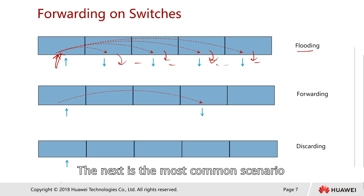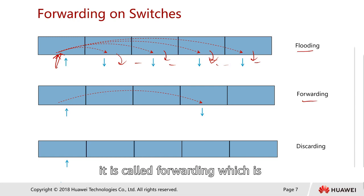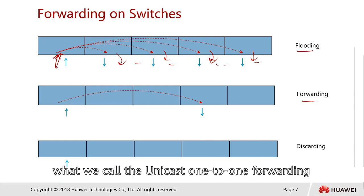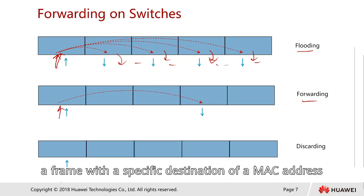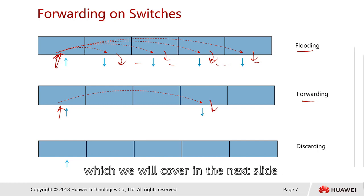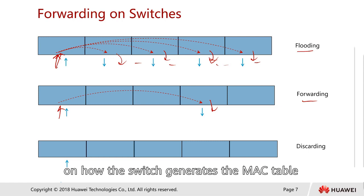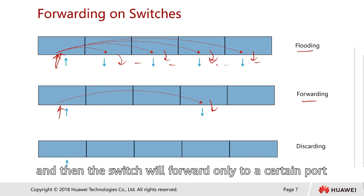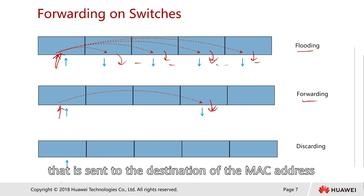The next scenario — the most common — is forwarding, which we call unicast one-to-one forwarding. When the switch receives a frame destined for a specific MAC address, the switch will look up the MAC address table (covered in the next slide) and then forward only to the port that leads toward the destination MAC address.